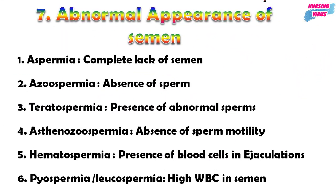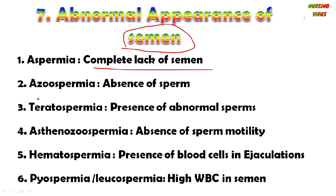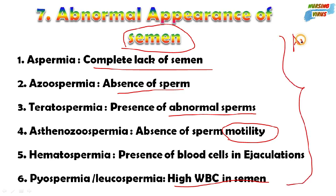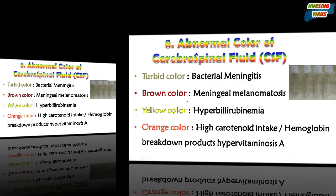The next topic is the abnormal appearance of semen in males. Aspermia is the complete lack of semen. Azoospermia is the absence of sperm. Teratospermia is the presence of abnormal sperm. Asthenospermia is the absence of sperm motility. Hematospermia is the presence of blood cells in ejaculation. Pyospermia or leukospermia is a high amount of WBC seen in semen. This area has been covered in AIIMS and JIPMER examinations.